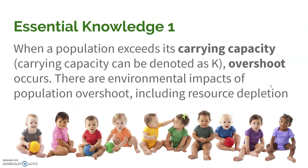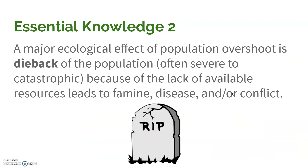When a population exceeds its carrying capacity, which we denote as K, we see something called overshoot. There are definitely impacts of overshoot because if there are too many individuals, they're going to use up a lot of those resources, which can then in turn diminish the carrying capacity.